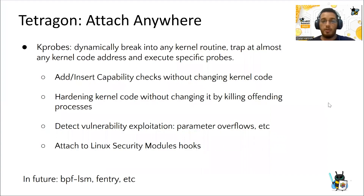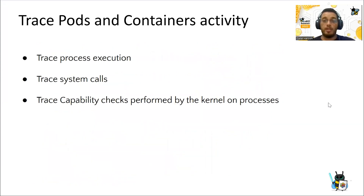Tetragram uses kprobes to dynamically break into any kernel routine, so we can insert capability checks without changing kernel code. We can harden the kernel code, detect exploits or bugs. This also allows tracking process execution, system calls, and capability checks performed by the kernel on processes.